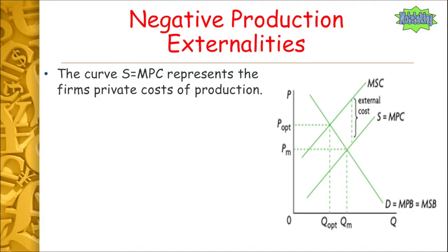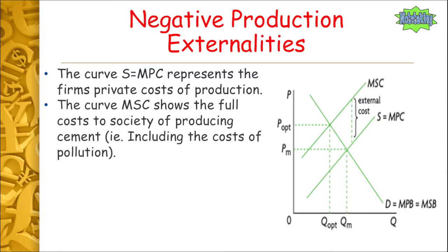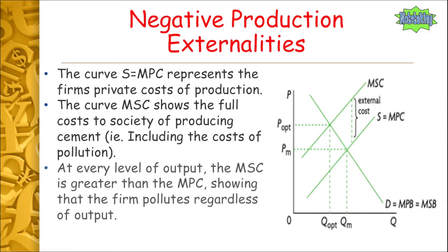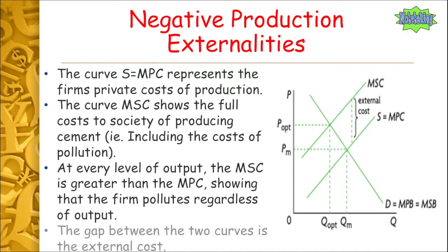Let's look at how this looks on a graph. We have our supply equals marginal private cost curve, representing the firm's private costs of production. We also have the marginal social cost curve, showing the full cost to society of producing cement. This additional curve shows the extra costs of the pollution society must endure — the cost of dumping in the ocean and polluting the atmosphere. At each and every level of output, the marginal social cost is greater than the marginal private cost. The gap between the two curves is what we know as the external cost — the cost to society of producing this good.